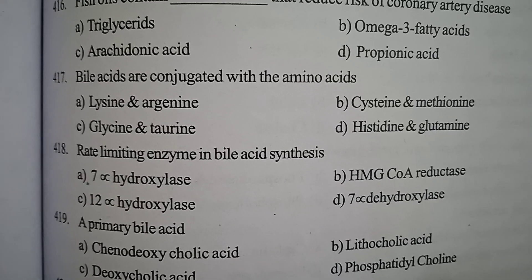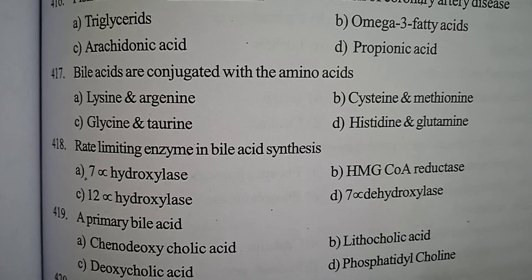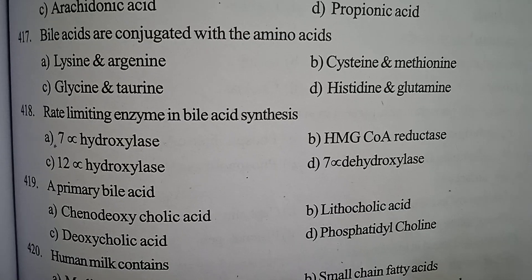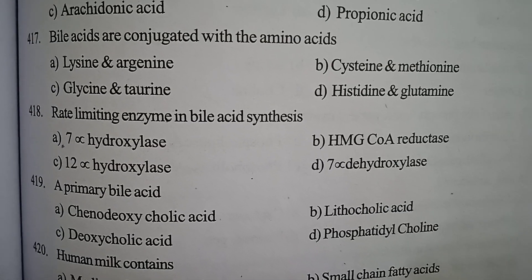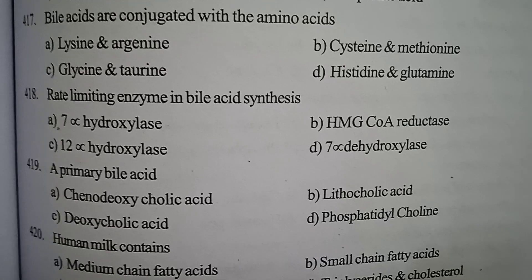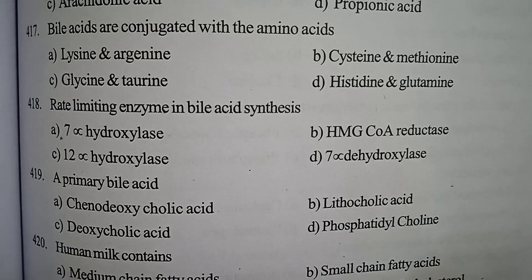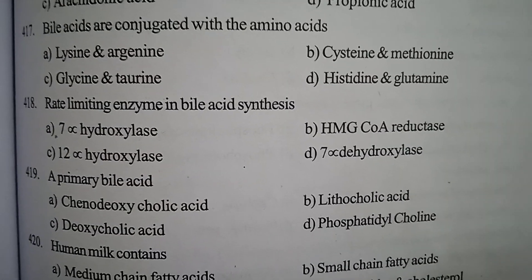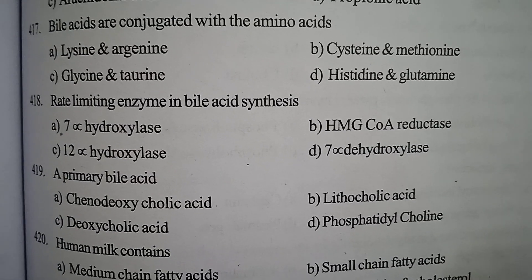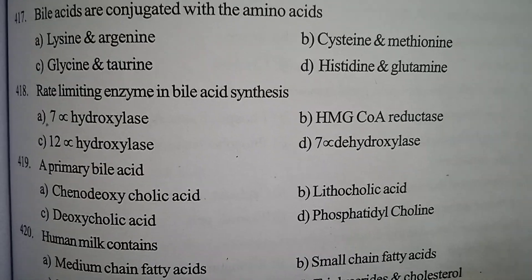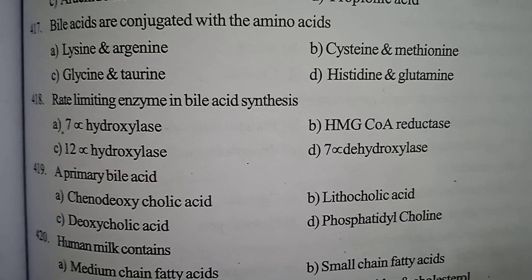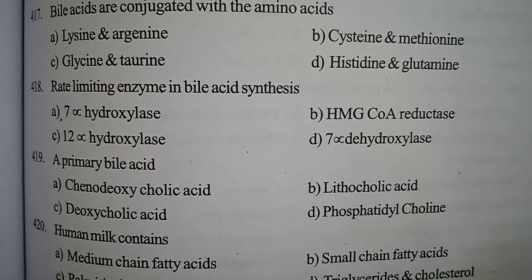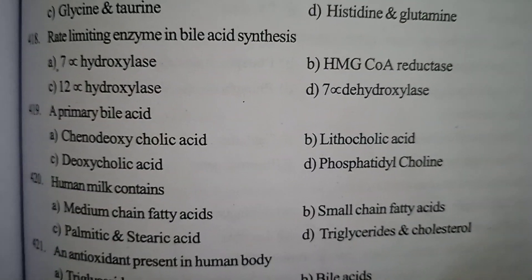Next one: rate limiting enzyme in bile acid synthesis — option A 7-alpha hydroxylase, option B HMG-CoA reductase, option C 12-alpha hydroxylase, option D 7-alpha dehydroxylase. Correct answer: option A, 7-alpha hydroxylase — forming glycocholic acid and taurocholic acid.